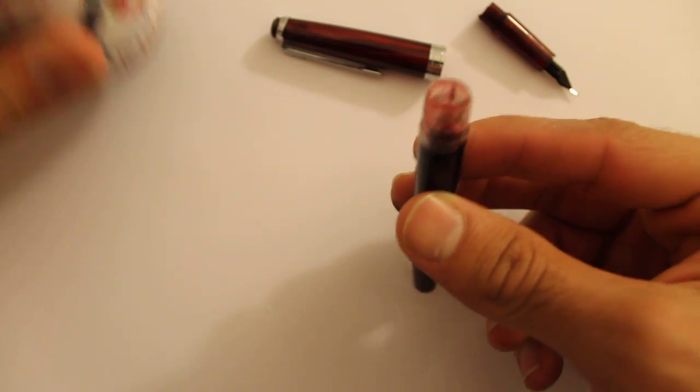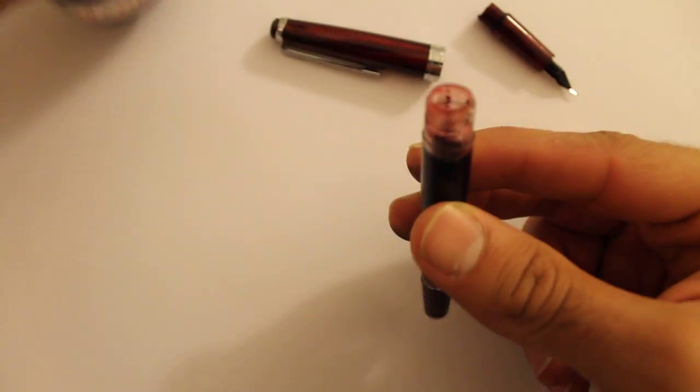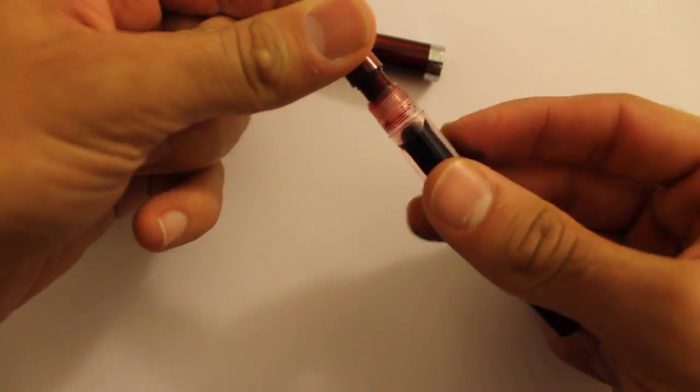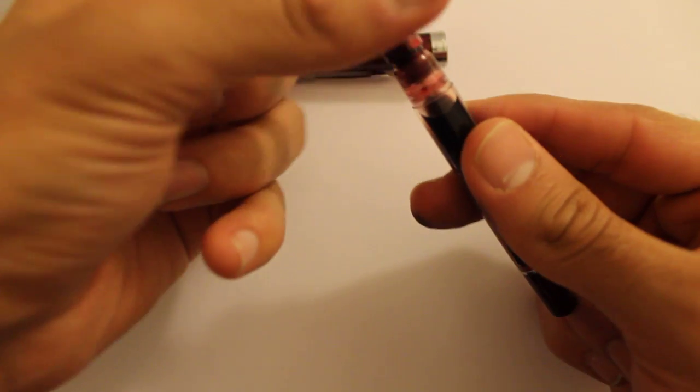So this is why it's called an eyedropper fountain pen because we used an eyedropper to fill it. Oh my god this is so creative naming. And you just screw it right back in. It's as simple as that. How long did that take? No time at all.